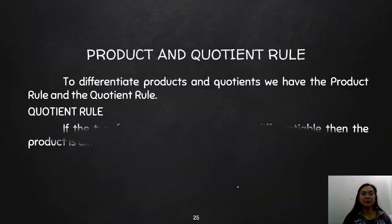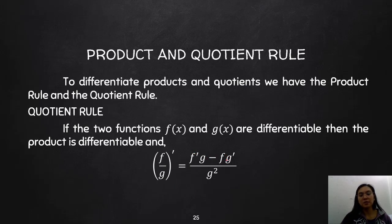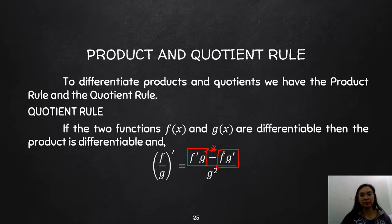For the quotient rule, if you have two functions f(x) and g(x), the derivative of f/g is: (f′·g − f·g′) all over g². Notice the difference from the product rule: the quotient rule has a minus sign instead of plus, and the whole thing is divided by g squared. For the first term, treat g as constant; for the second, treat f as constant.